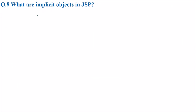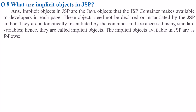What are implicit objects in JSP? Implicit objects in JSP are Java objects that the JSP container makes available to developers in each page. These objects need not be declared or instantiated by the JSP author — they are automatically instantiated by the container and accessed using standard variables. That is why they are called implicit objects.